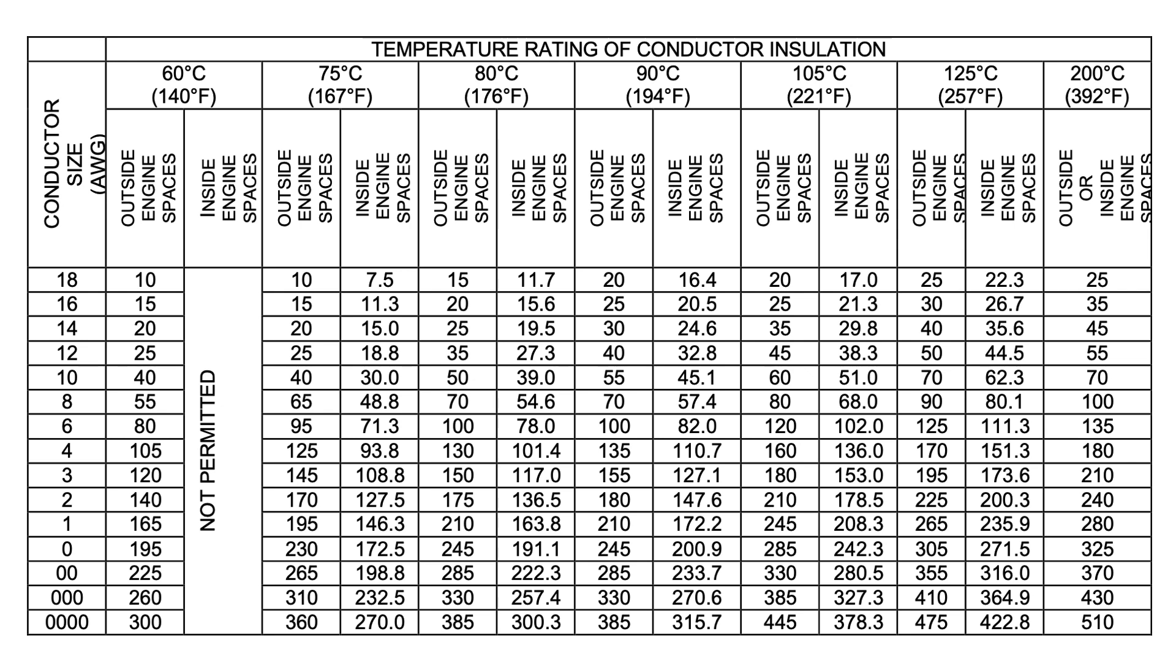This table shows us the nominal current ratings for each of the cable sizes based on their insulation temperature ranges. For cables rated at 140 degrees Fahrenheit that are to be used outside the engine bay, we can use this column here. And we can see in this row the 10 AWG cable has a current rating of 40 amps. Well in excess of the 10 amps for our example.